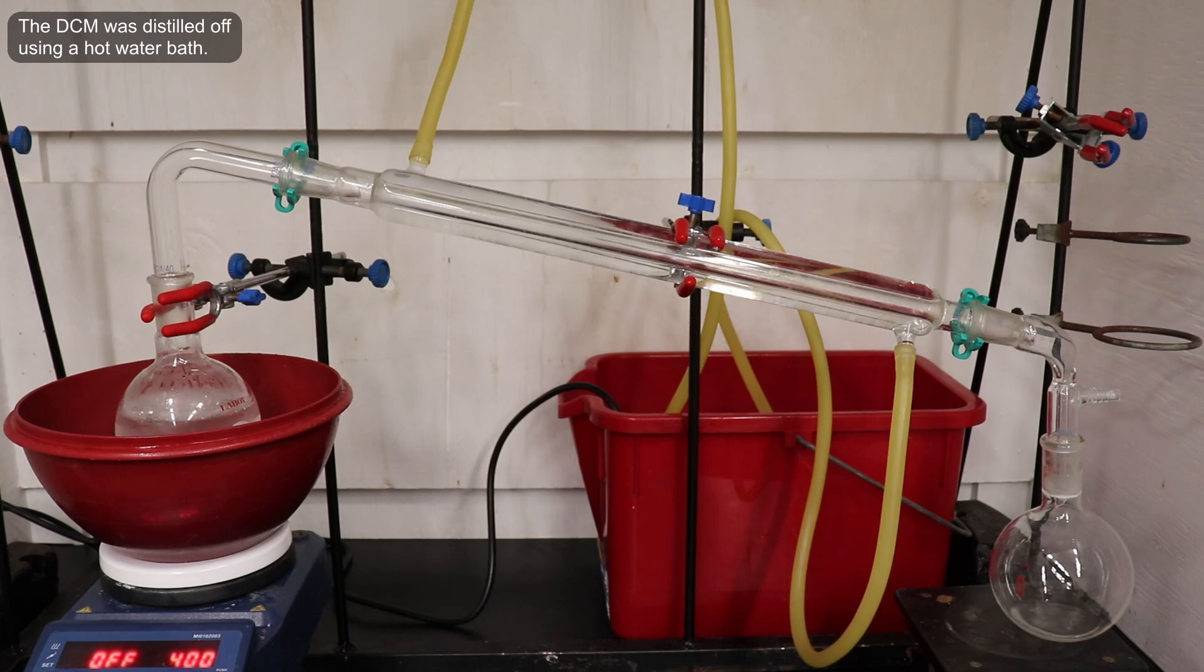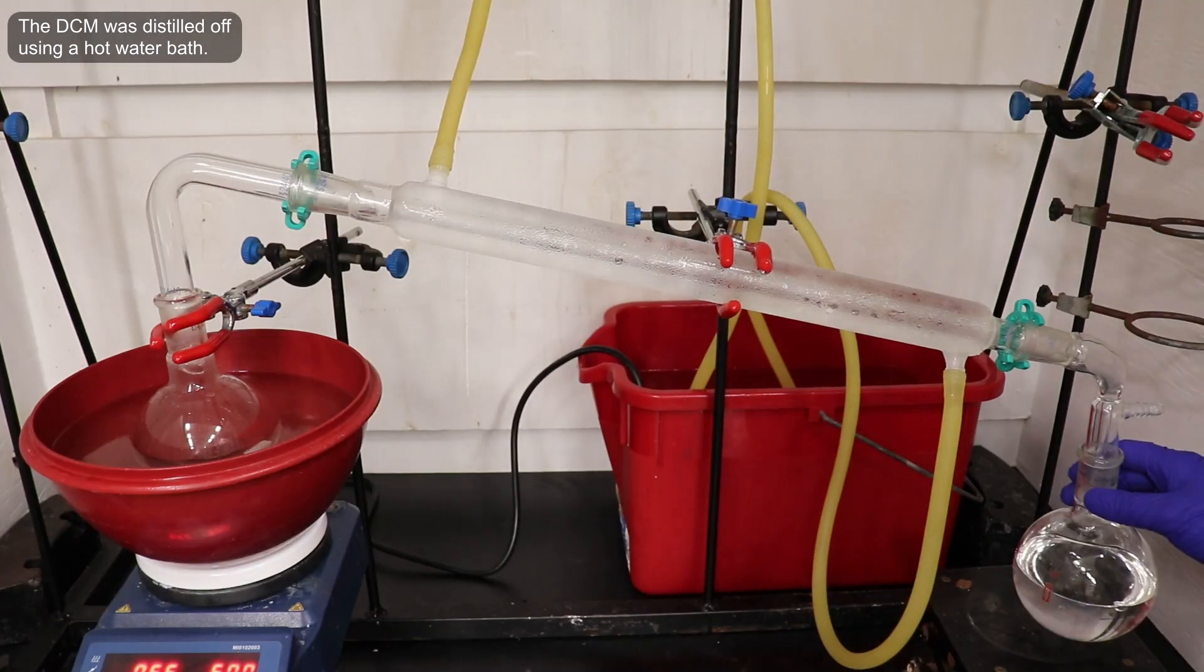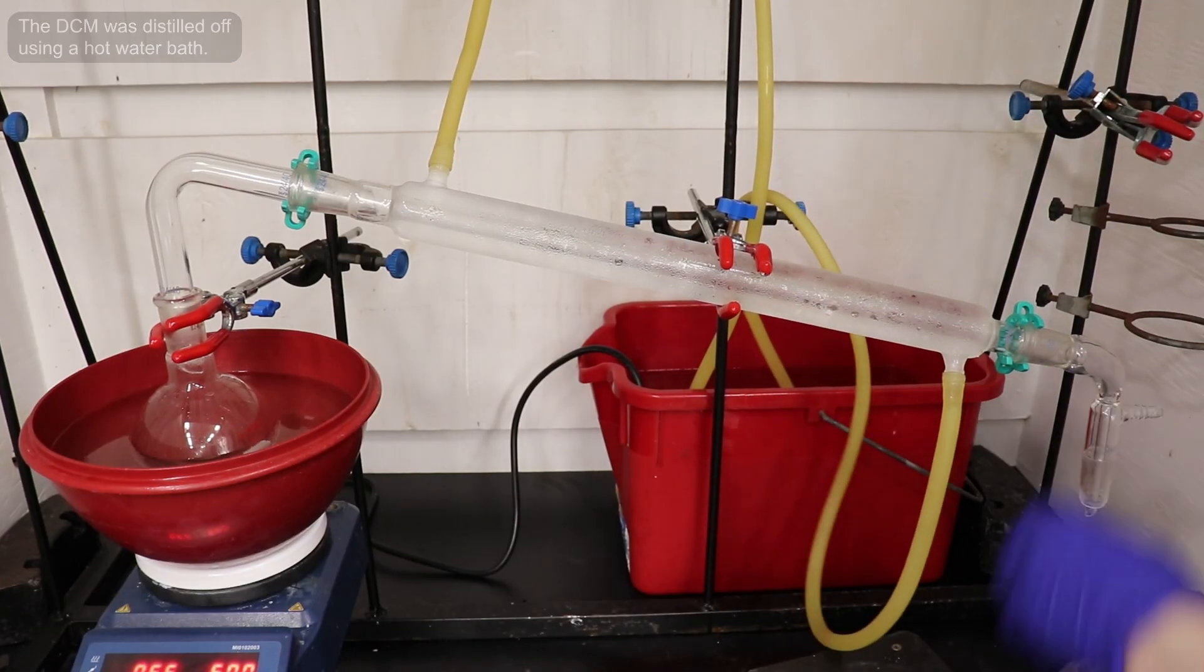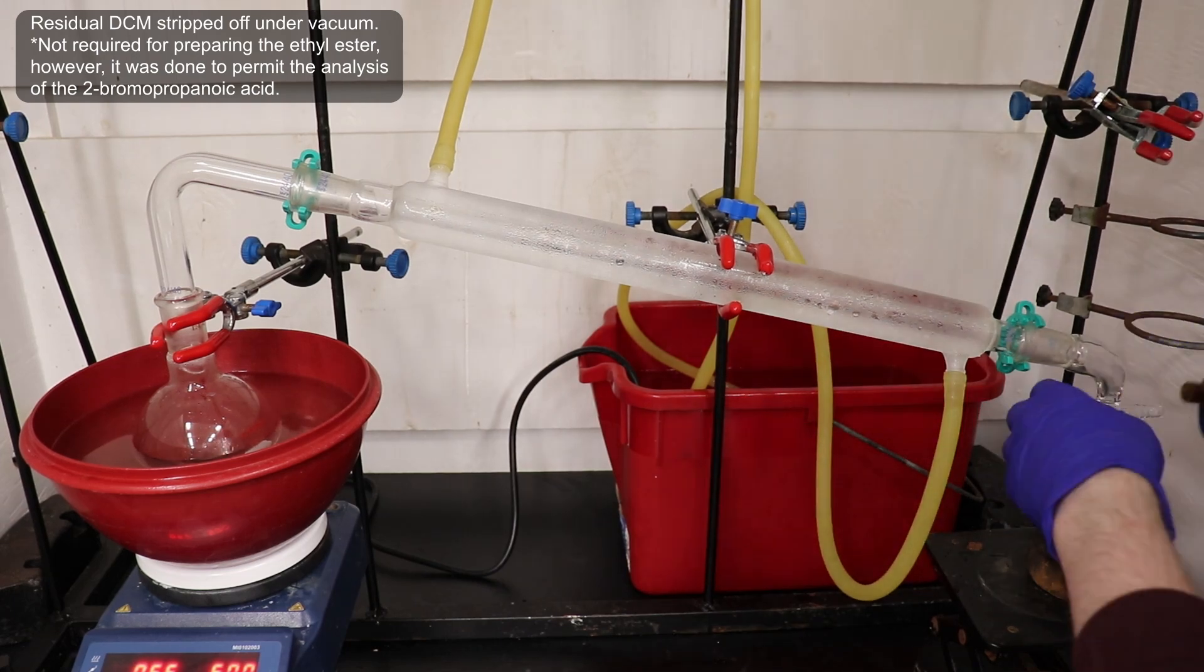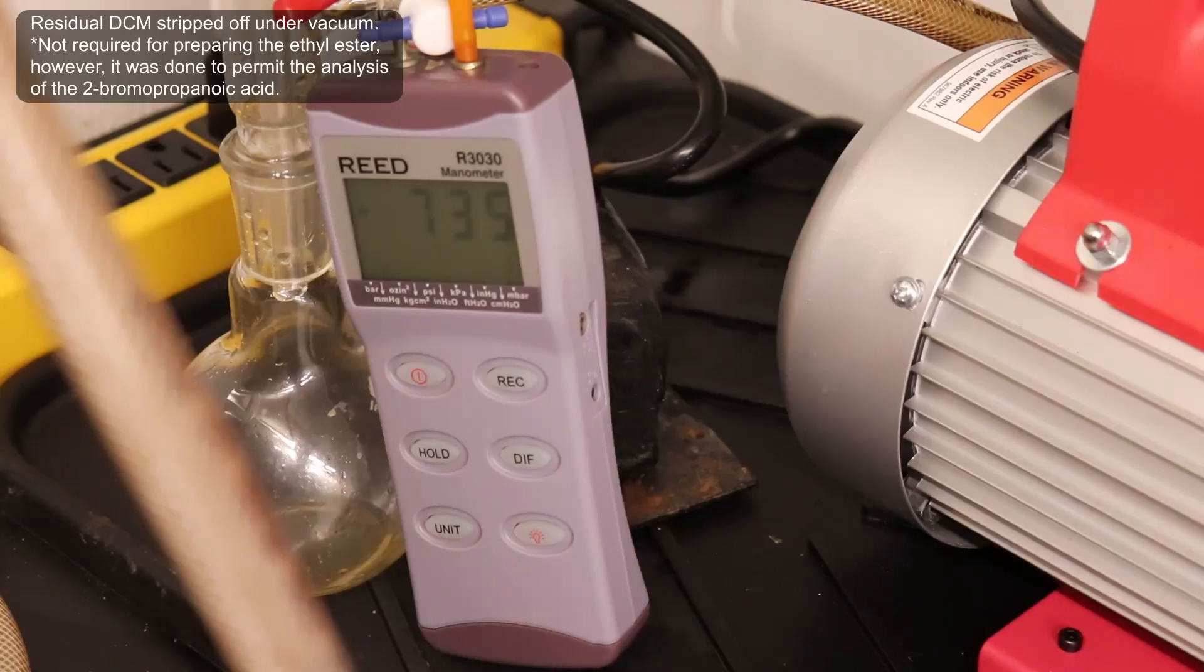I then set up for a simple distillation, and distilled off the bulk of the DCM using a hot water bath. Once the DCM stopped distilling over at atmospheric pressure, I emptied out the receiving flask, and then put the whole apparatus under high vacuum to pull out any residual DCM.